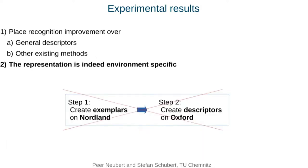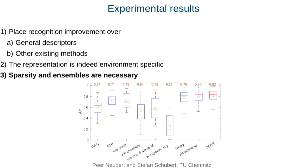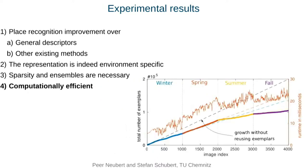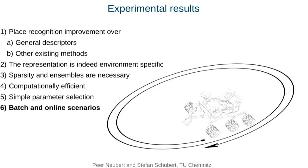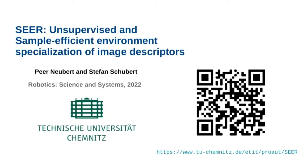The representation is indeed environment-specific: it does not work to create exemplars on Norland and then create descriptors in a different environment like Oxford. An extensive ablation study shows that each component — sparsity and ensembles — is necessary for performance. SEER is computationally efficient; for repeated operations in the same environment, the growth of M significantly slows down and more exemplars are reused, with overall operations only about twice as large as for comparing initial descriptors. Parameter selection is non-critical — we use the same parameters for all experiments. Finally, SEER can be used in batch and online scenarios without requiring the complete database to be available upfront, for example for loop closure detection in online SLAM.